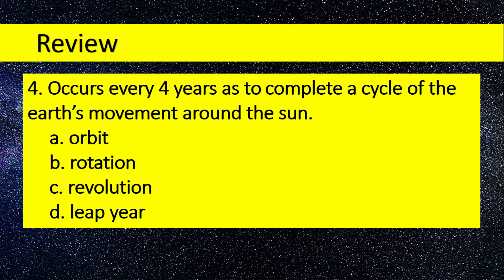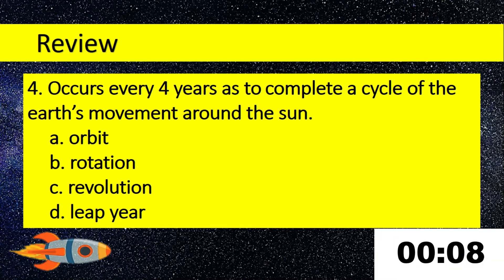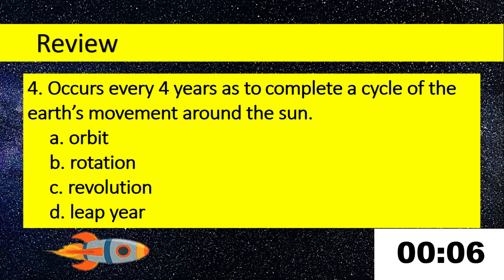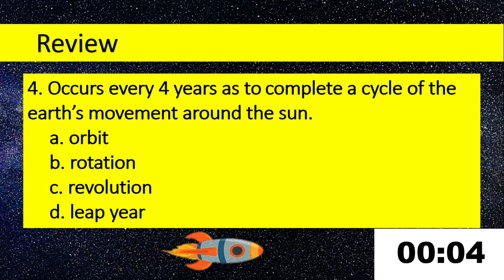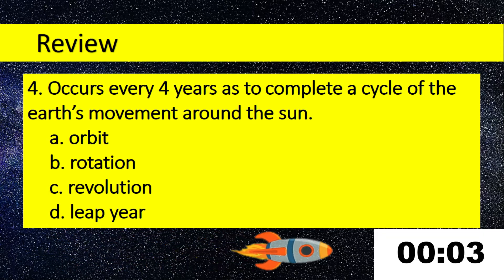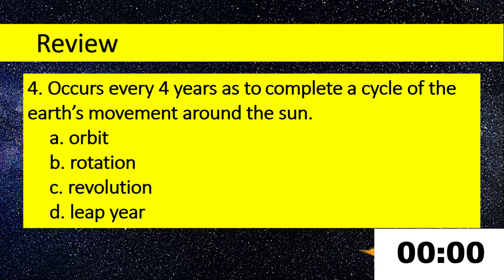Number 4. Occurs every 4 years to complete a cycle of the Earth's movement around the Sun. A. Orbit, B. Rotation, C. Revolution, D. Leap year. Answer: Leap year.